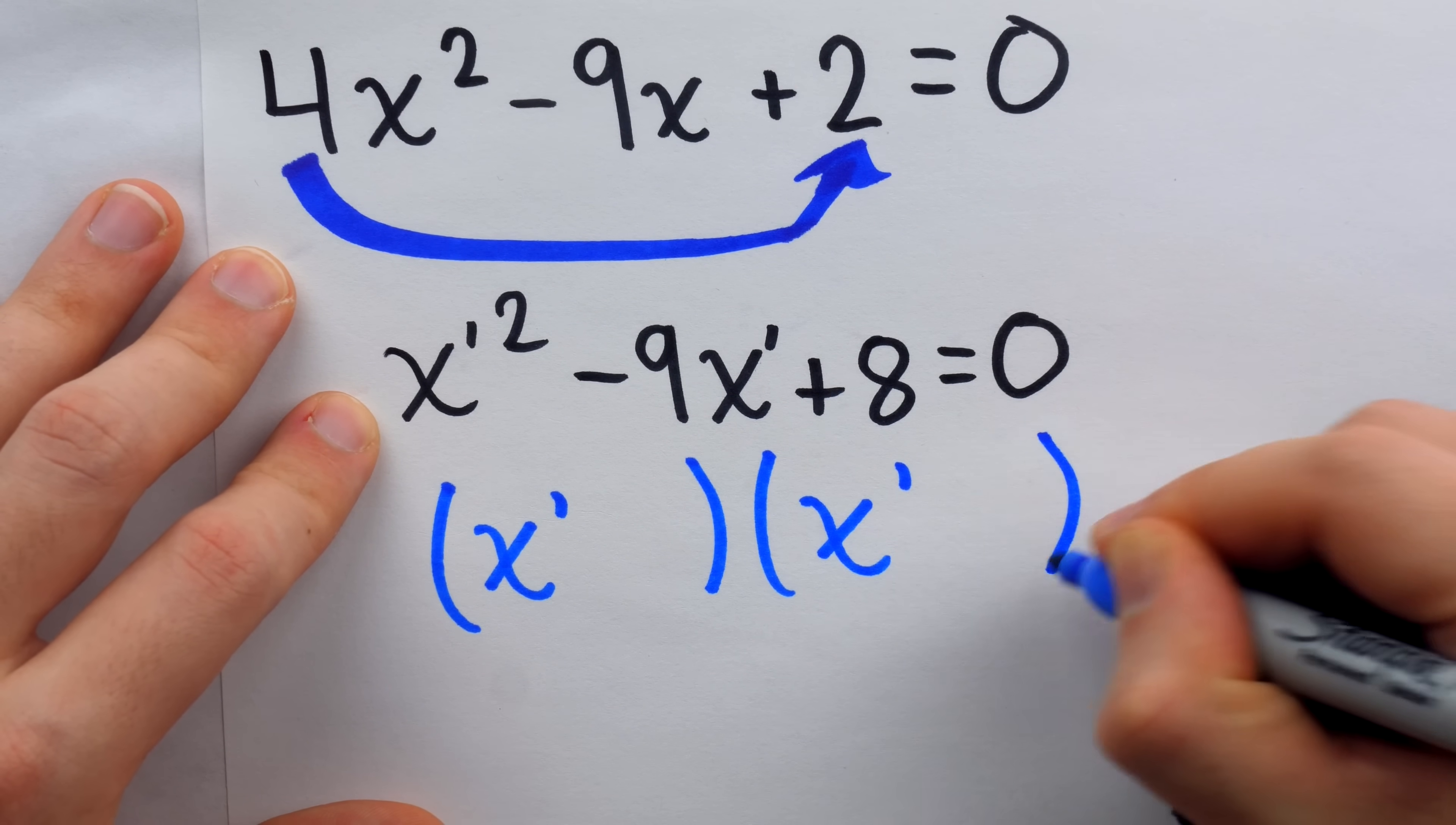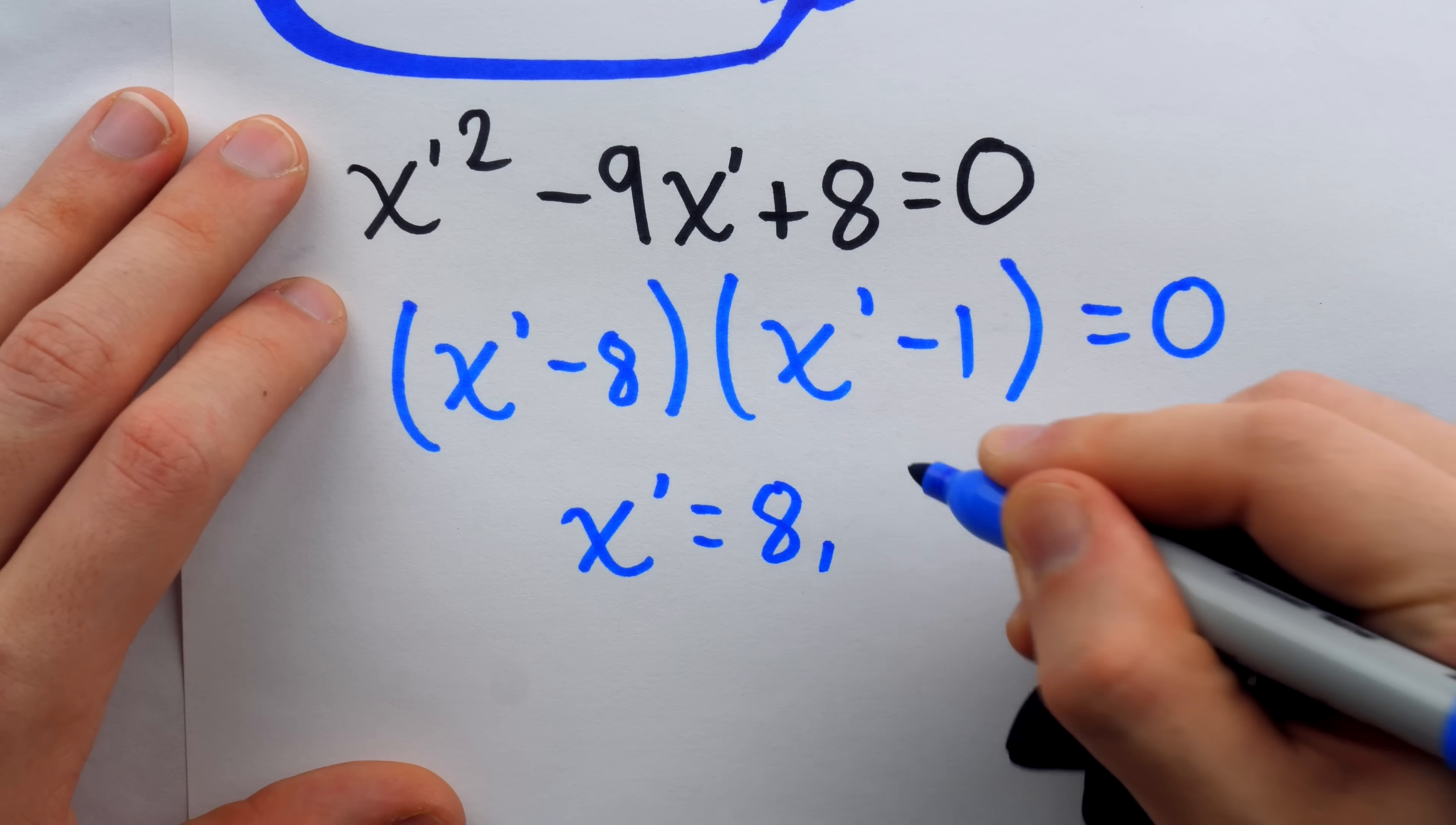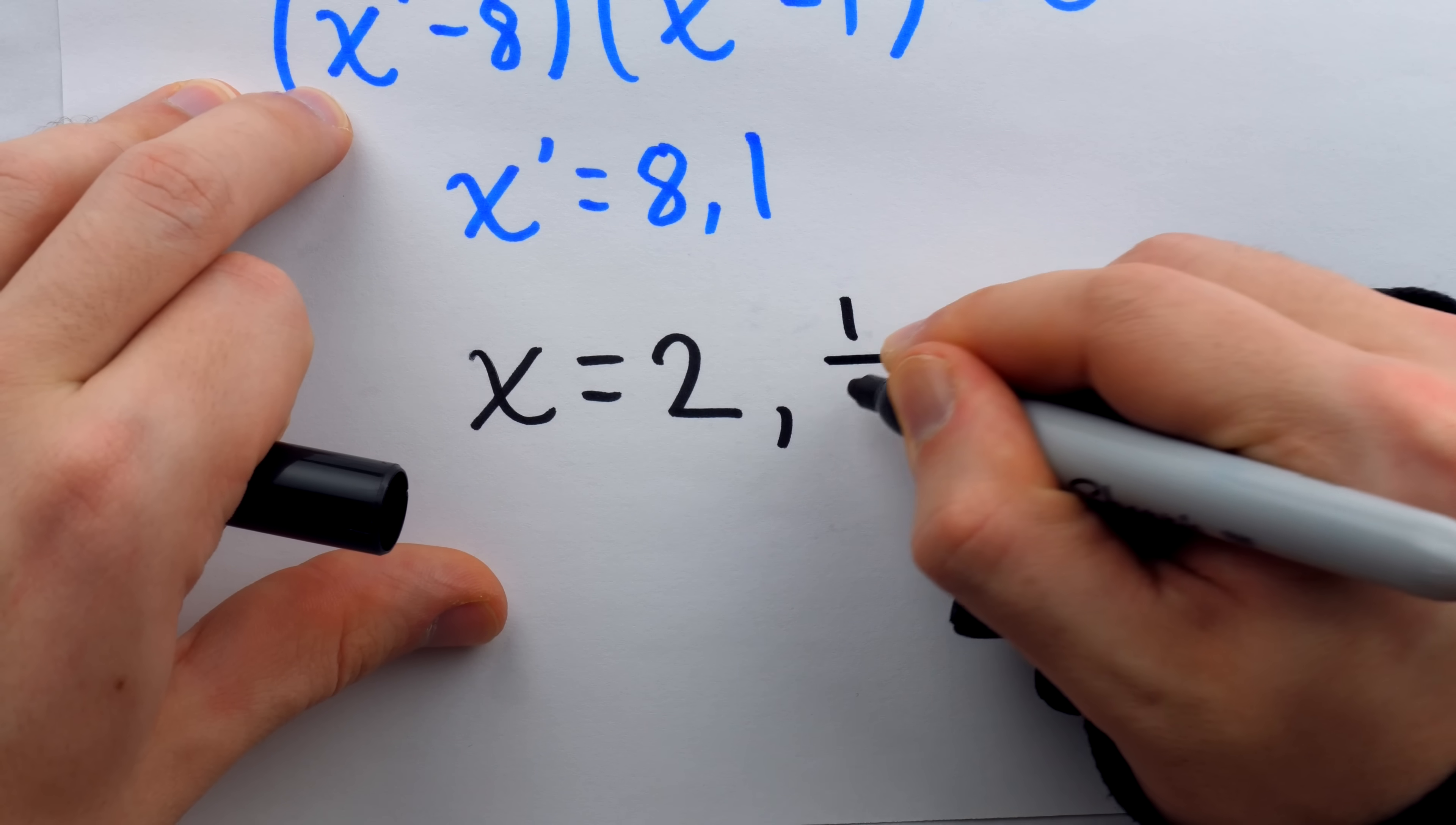What two numbers multiply to positive 8 and add to negative 9? Well, that would be negative 8 and negative 1. They multiply to positive 8 and they add to negative 9, so that is the correct factorization. So by the zero product property, what are the values of x prime? Well, it would be positive 8 and positive 1. Then to find the values of x that we are actually looking for, we just take the values of x prime and divide by that original leading coefficient of 4. 8 divided by 4 is 2, and 1 divided by 4 is 1 over 4.